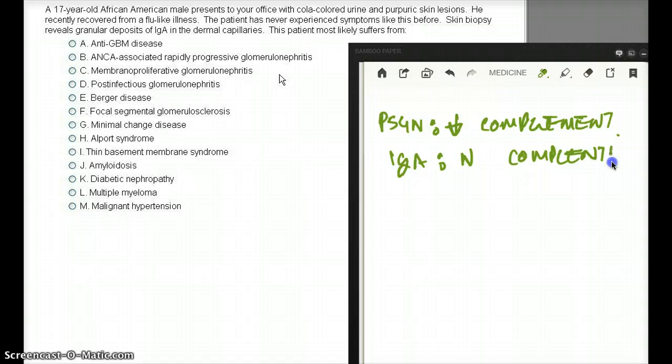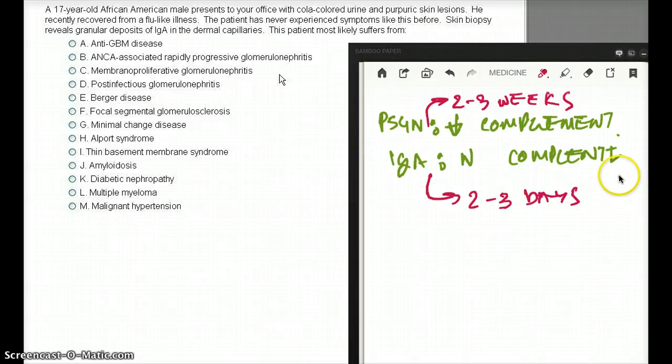That's one difference. Another difference is that PSGN is going to happen at about two to three weeks after. But IgA is going to be around two to three days. A lot more recently than PSGN. Both are autoimmune. Both are going to have granular pattern on immunofluorescence. There's a lot of similarity. But there is some distinct difference which you can pick up like that. Anyway, so that's my interpretation of Berger disease or IgA nephropathy.